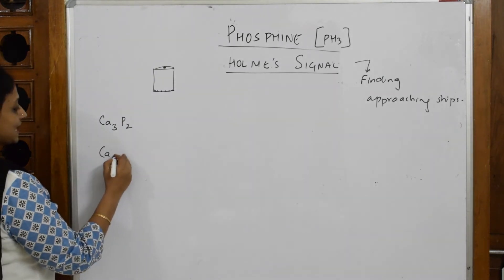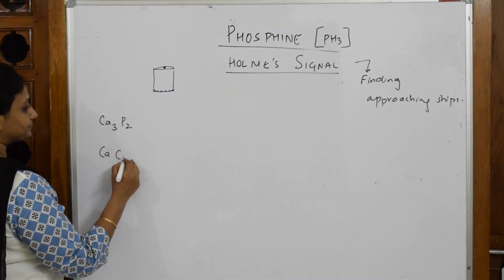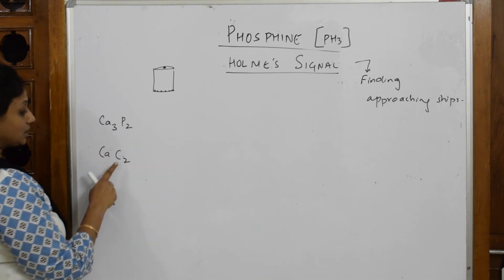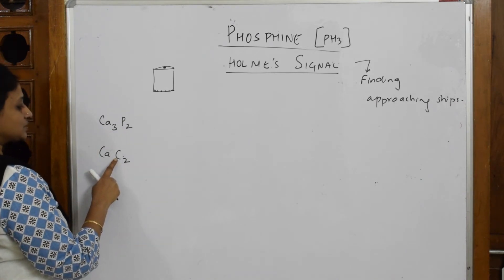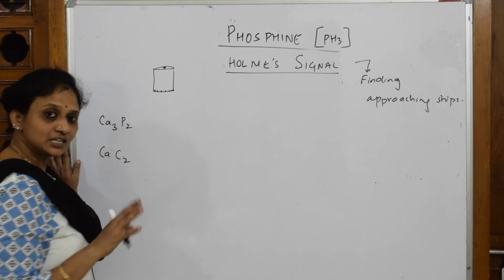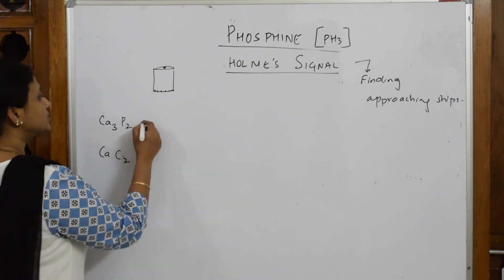I've already shown you how to prepare calcium phosphide. Phosphorus valence is 3, calcium valence is 2. This one, calcium carbide - calcium valence is 2, carbon valence is tetravalent.